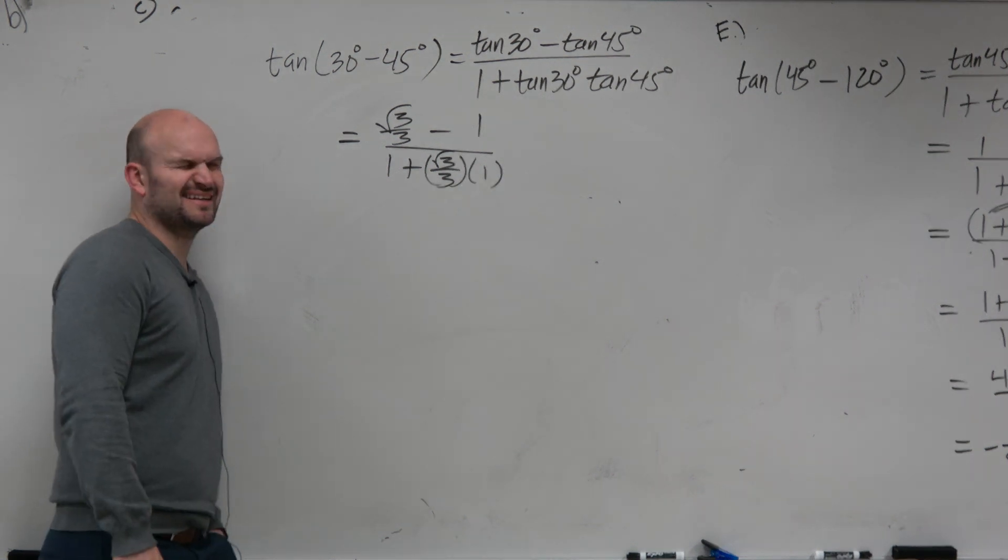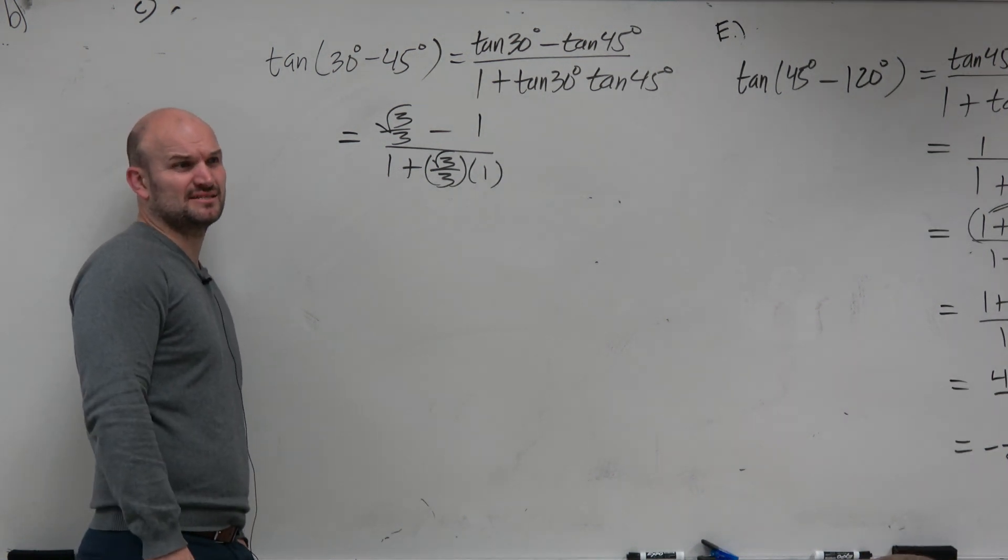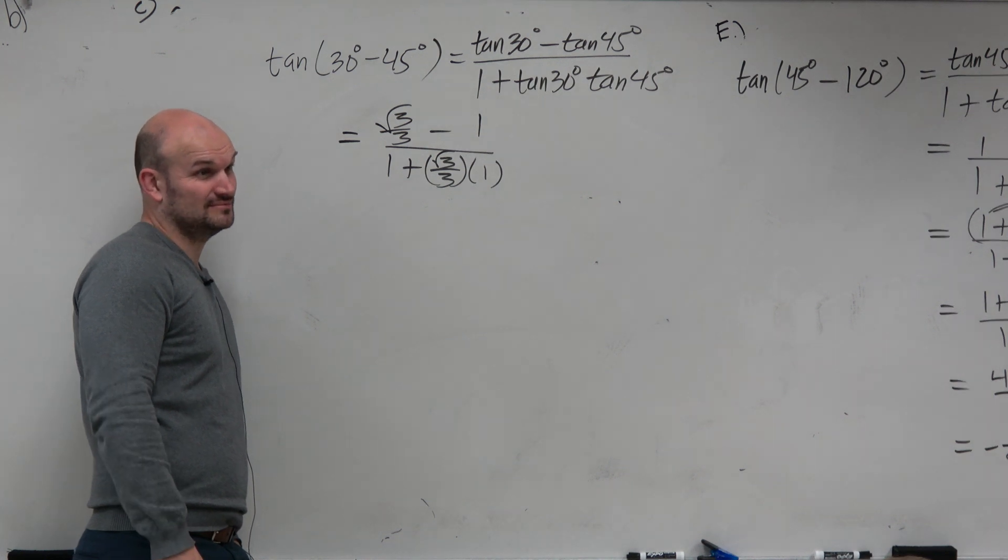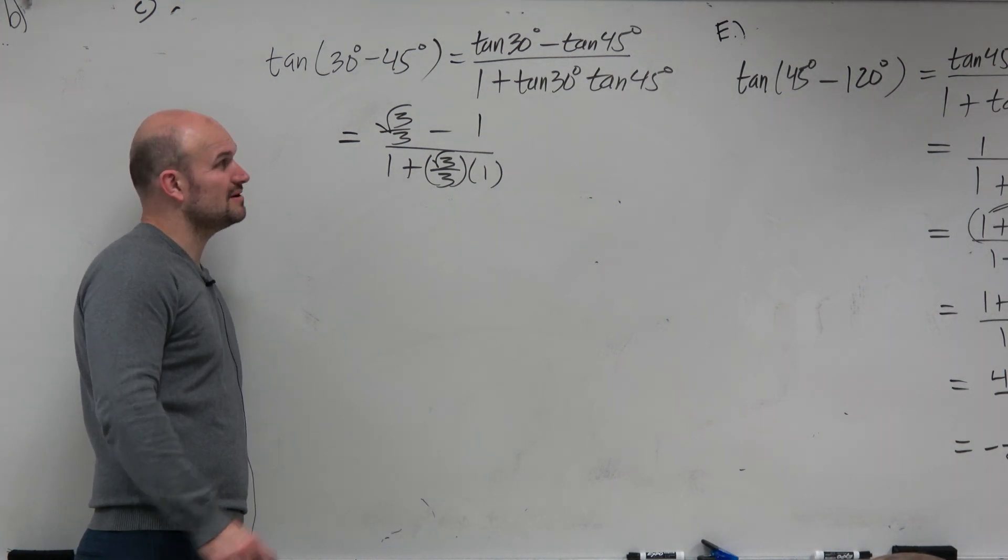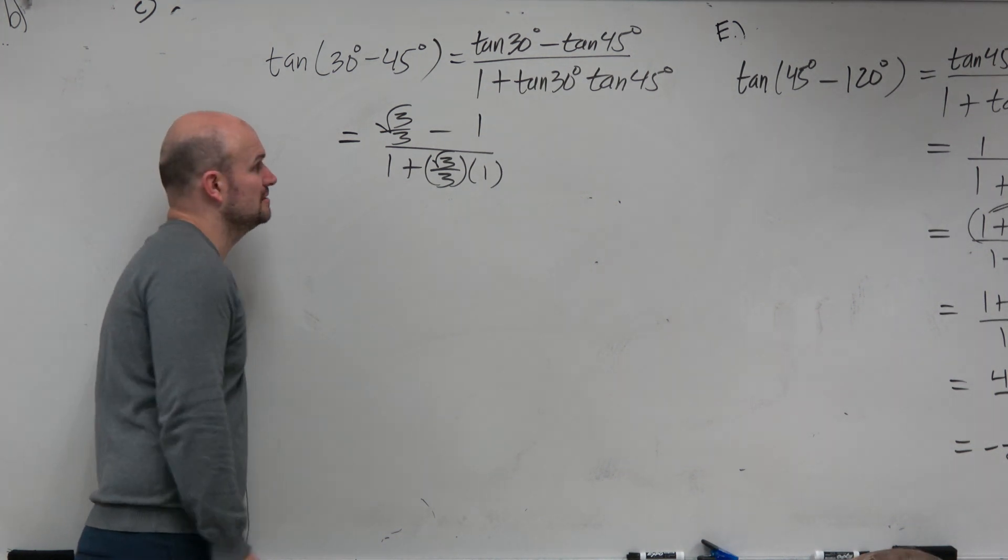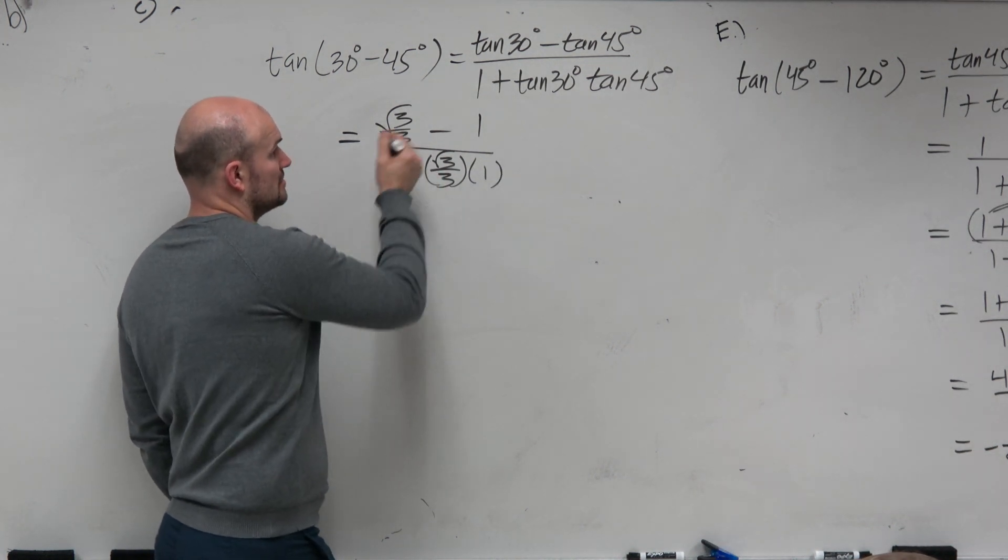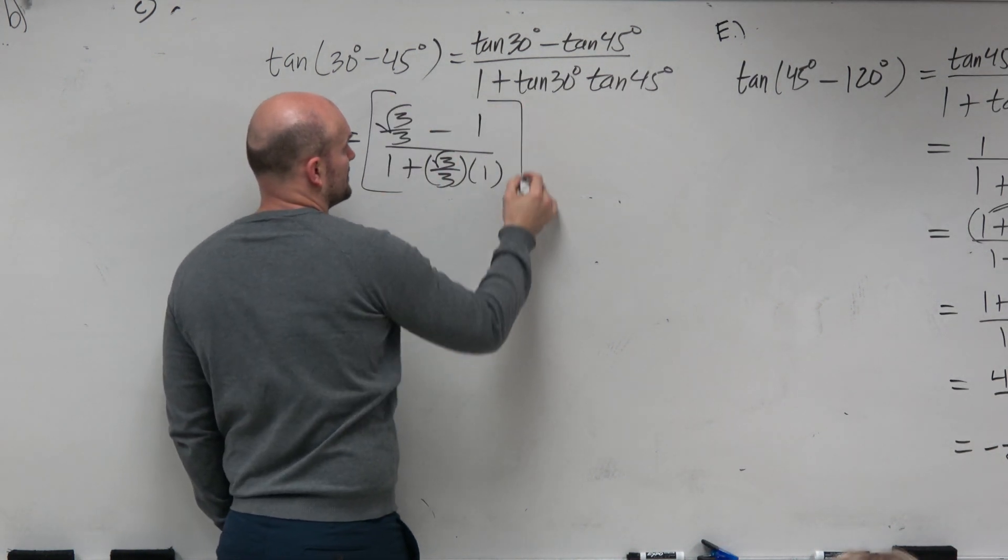So now, you guys recognize there's kind of too many fractions here for my taste. Do you guys agree? Right? So why don't we get rid of the fractions? What's the common denominator here? 3. So why don't you just multiply everything by 3?